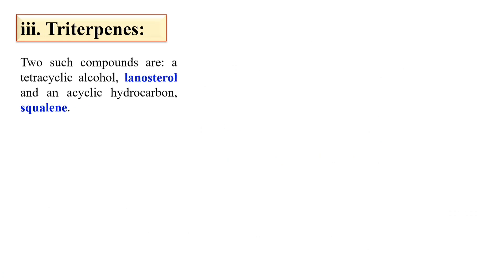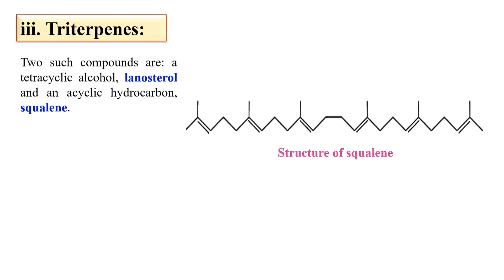Next, triterpenes. These triterpenes are not very widespread, but they are present in significant sources. The two triterpenes include lanosterol and squalene. Here is the structure of squalene.